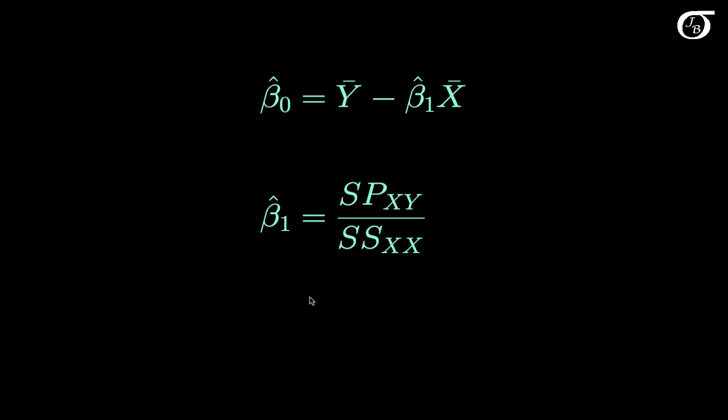Another way we'd have of writing this is that beta1 hat is equal to the covariance between X and Y, divided by the variance of X.